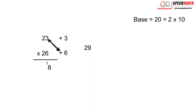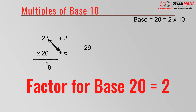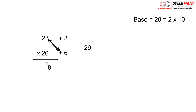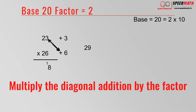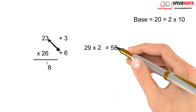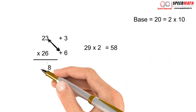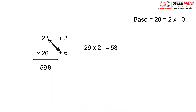Diagonally add 23 and 6 to get 29. Here comes the very important part: since the base is 20, the factor is 2, so we multiply 29 by 2, giving 58. Now add the carry forward 1: 58 + 1 = 59. So 23 × 26 = 598.